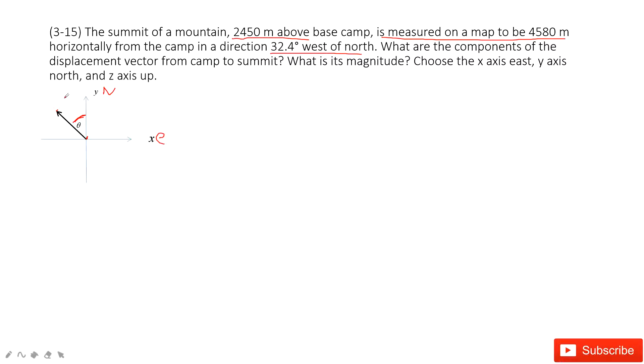So it has X-component, Y-component, and Z-component. Z-component we know is 2450. So this is Z. The next one, we need to project this vector in X-component and Y-component.